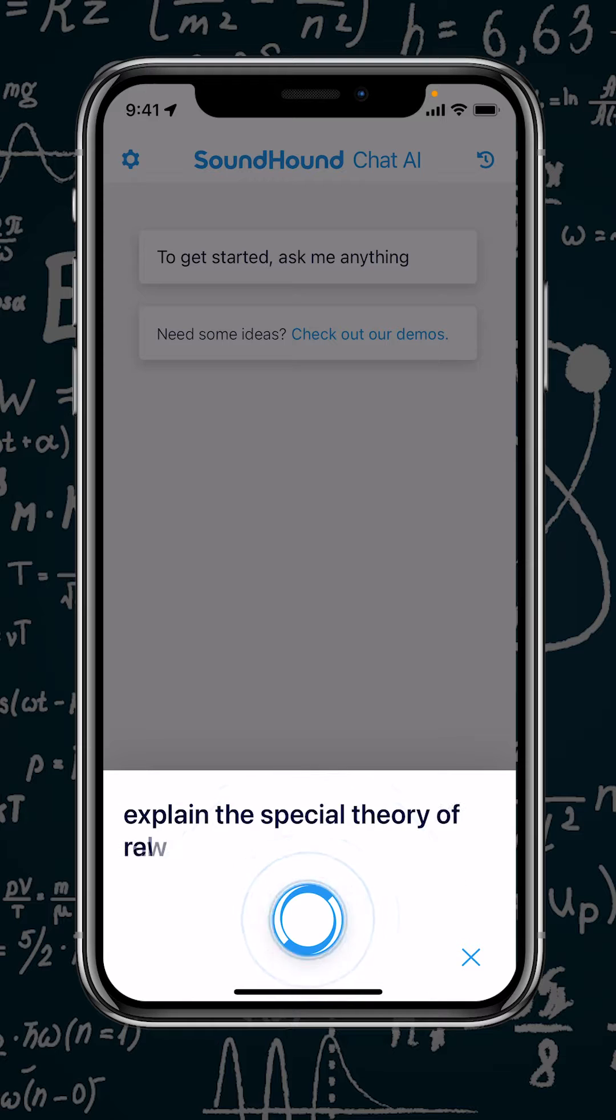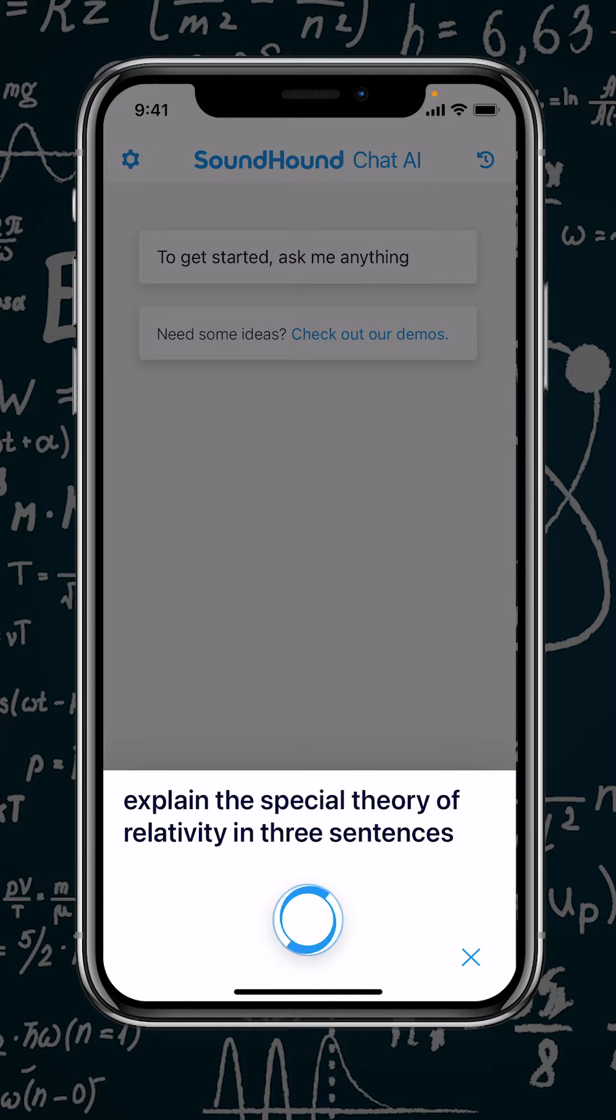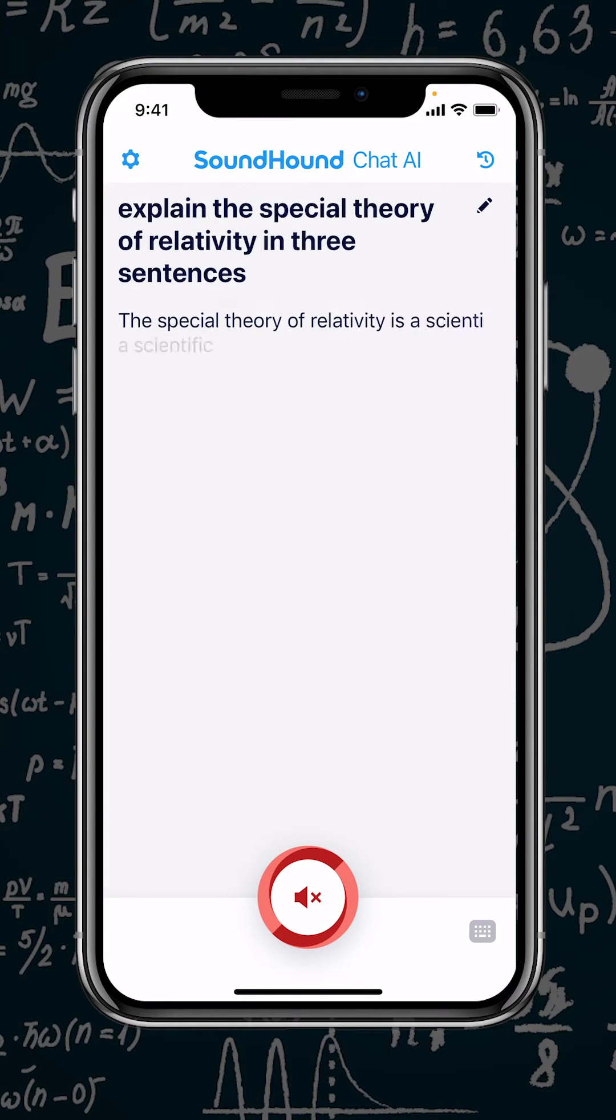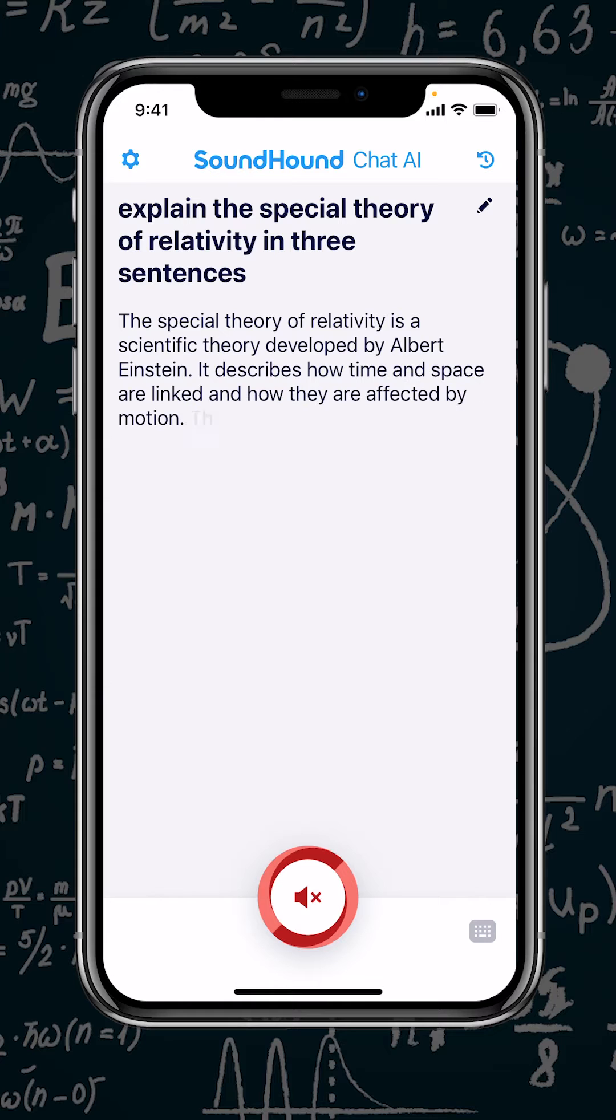The Special Theory of Relativity is a scientific theory developed by Albert Einstein. It describes how time and space are linked and how they are affected by motion. The theory also states that the speed of light is constant and is the same for all observers.